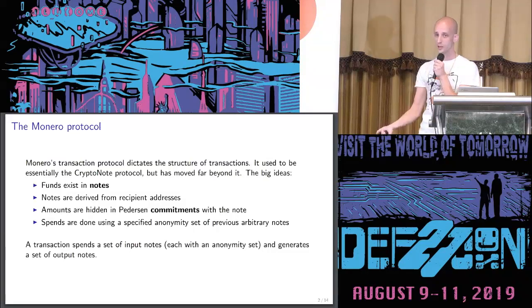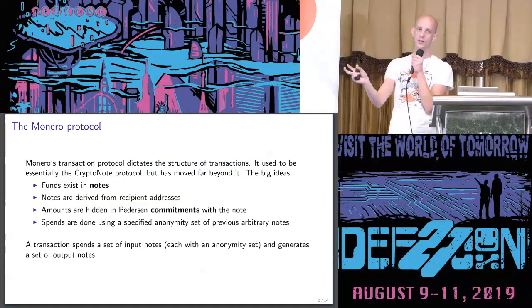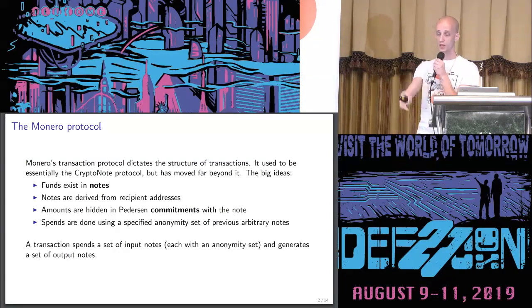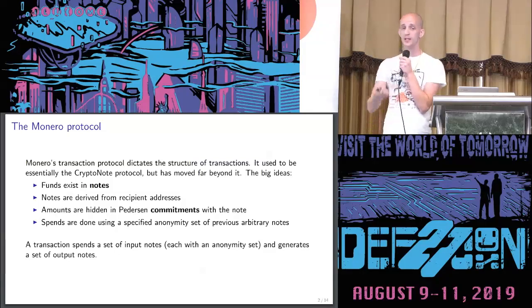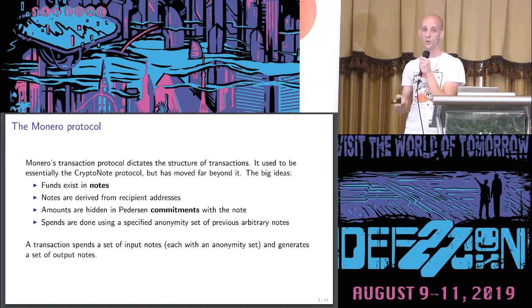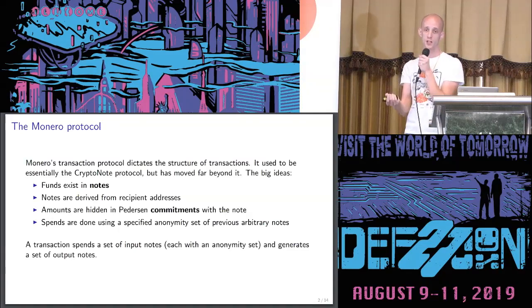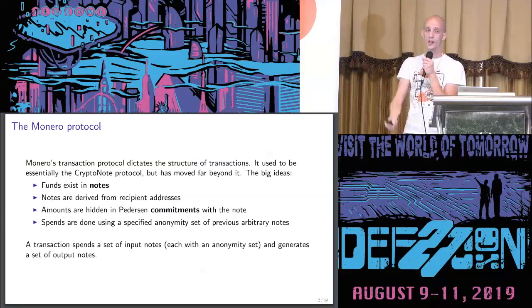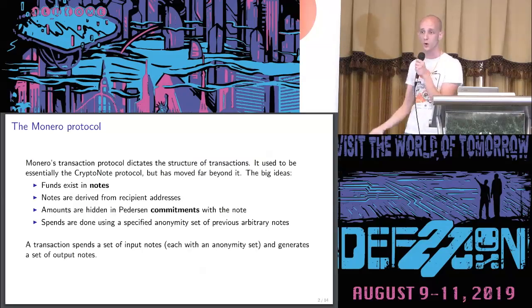It's important to make sure that funds going into a transaction are the same as funds going out. The spends in the Monero protocol, unlike Bitcoin and its derivatives, use a specified anonymity set of previous arbitrary notes. The Monero protocol does not mix funds — a particular note is spent in a transaction but obscured among other notes chosen non-interactively. A transaction spends a set of one or more input notes, each with its own anonymity set, and generates a new set of output notes. Transactions consume notes and generate new ones.